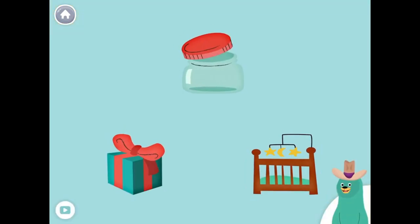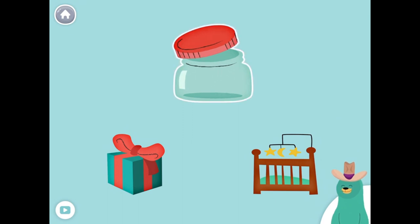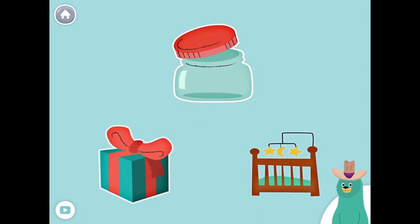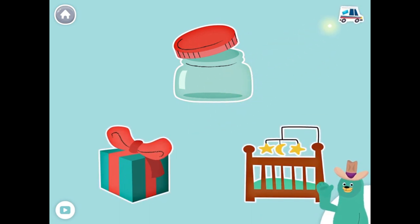All of these things have the 'E' sound in the middle. Tap them all and listen to the 'E' sound in the middle. Lid. Gift. Crib. Good job!